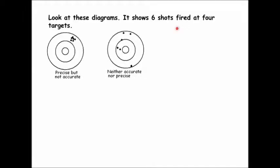Here's the second target. These shots are neither precise nor accurate. They're not accurate because they're nowhere near the bullseye — they're scattered all over. And they're not precise because they're not near each other. Measurements that don't come close to the accepted value and aren't near each other are neither precise nor accurate.